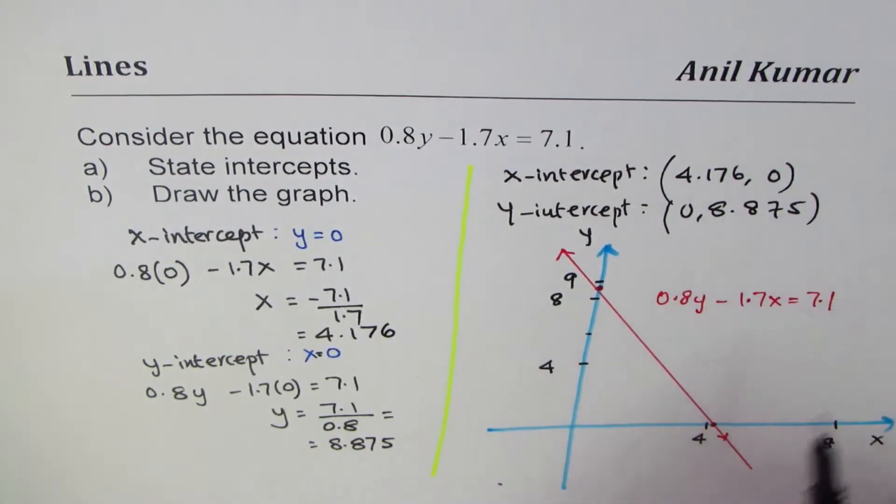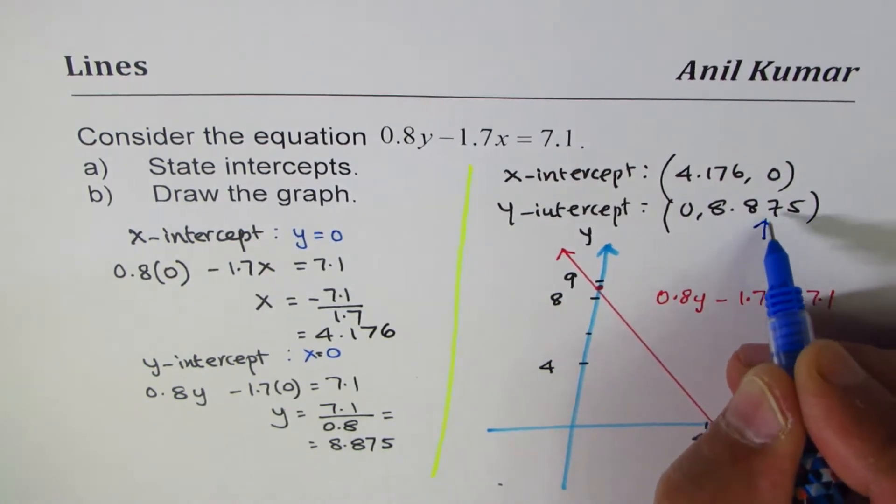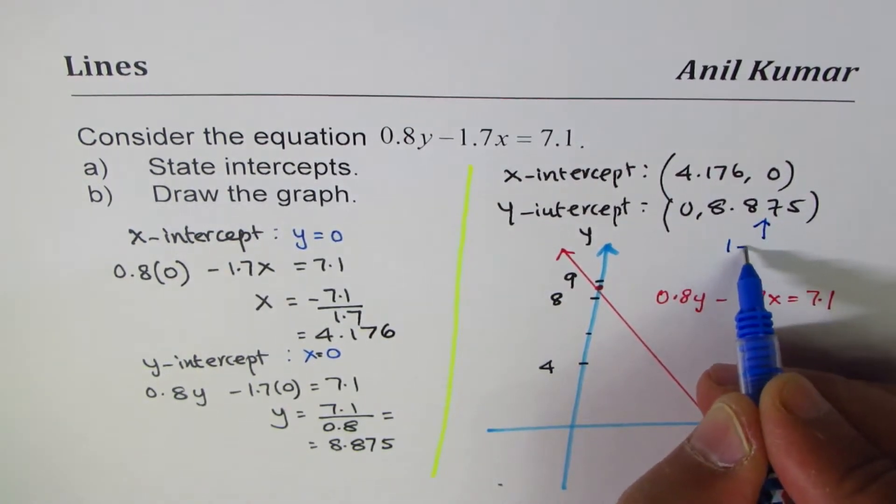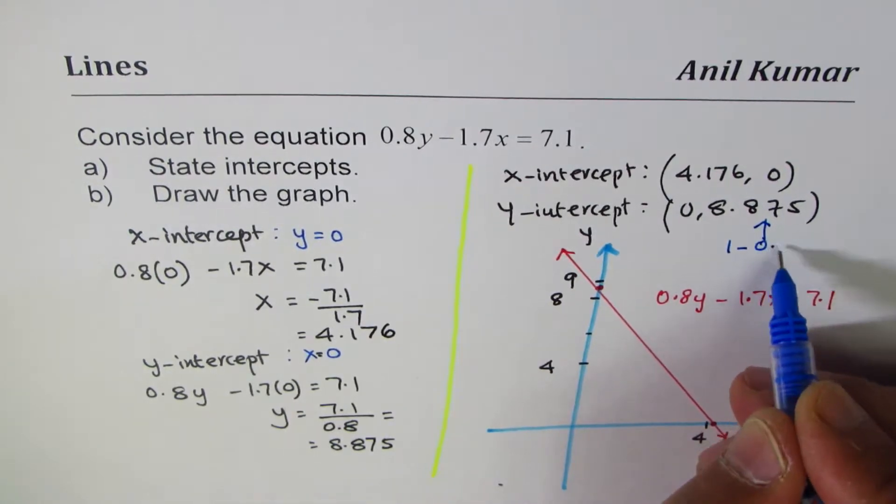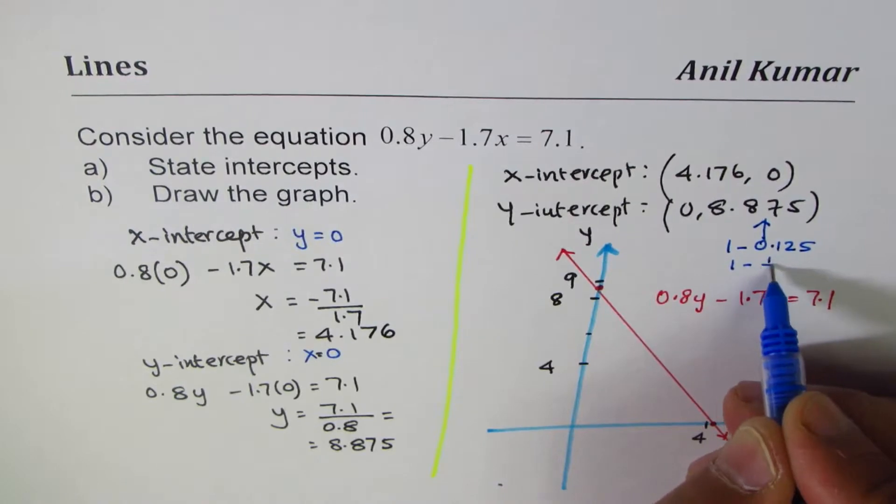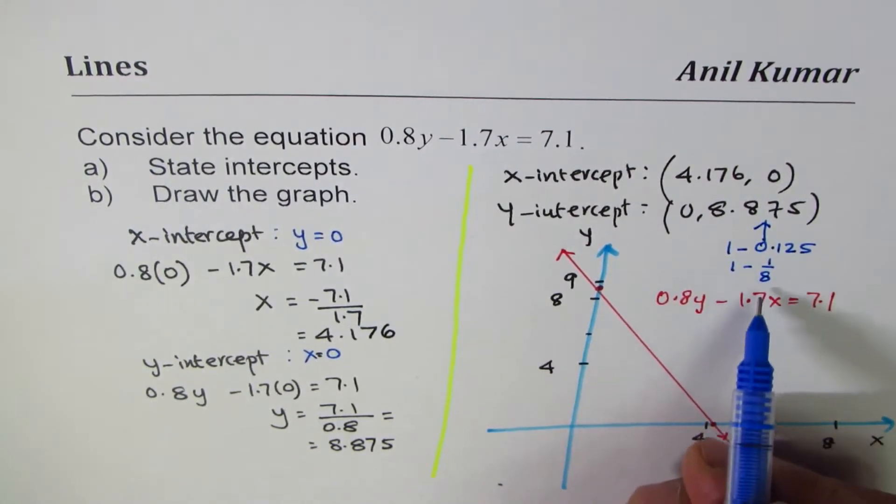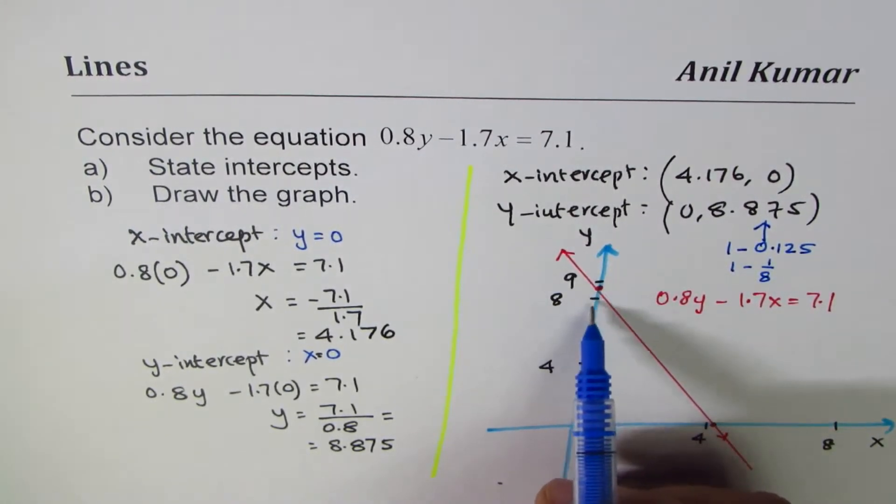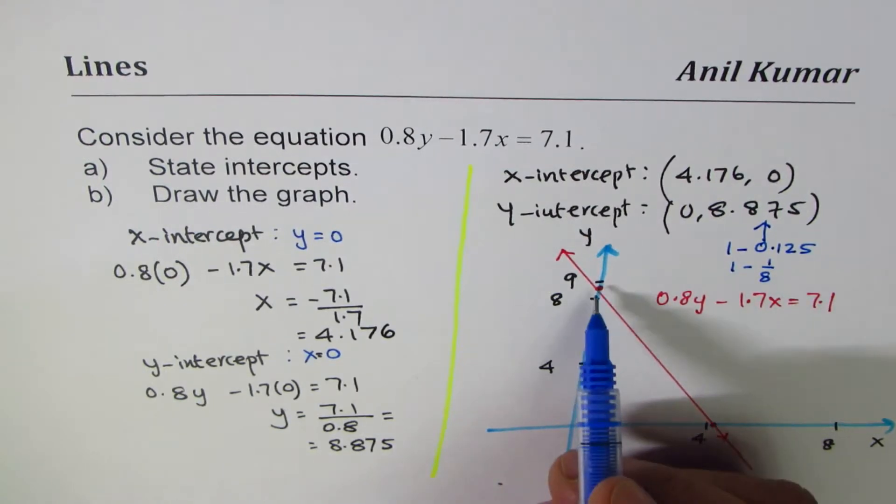So think like this: this 8.875 is 1 minus 0.125, or 1 minus 1 over 8. Do you see that? That is to say, one division could be divided into 8 parts, and then 1 less will be 8.75.